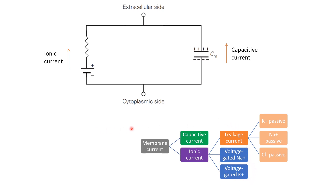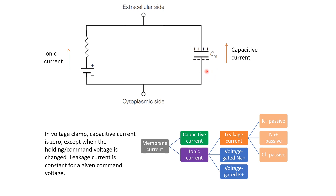As discussed, capacitive currents exist only when the membrane potential is changing. In voltage clamp, once the voltage has reached the command potential, capacitive current is zero; it only appears briefly during the transition from one command potential to another. The leakage current is present whenever the membrane potential differs from the equilibrium potential of the passive ion channels, and depends only on that difference. Once the membrane potential is fixed at a command voltage, the difference from the equilibrium potential is also fixed, so leakage currents remain constant throughout the voltage clamp duration.